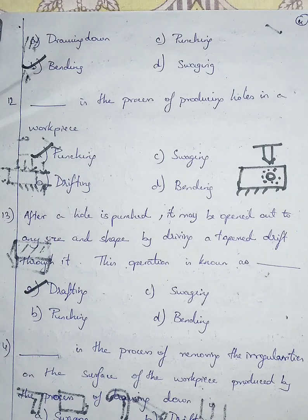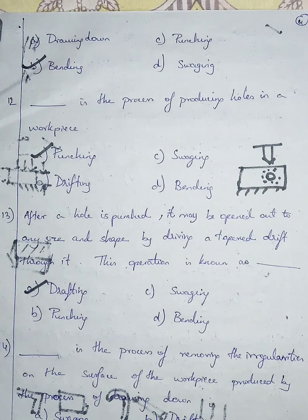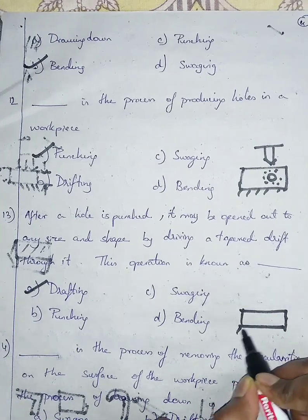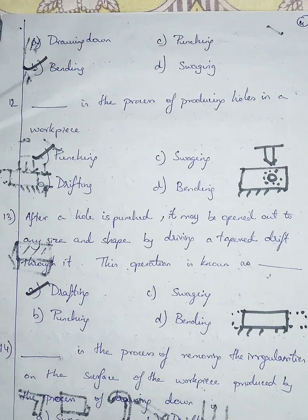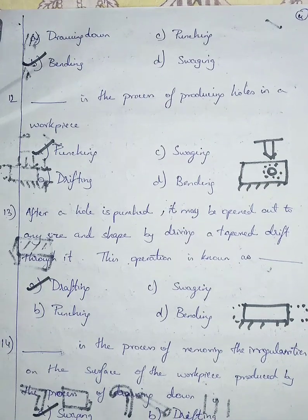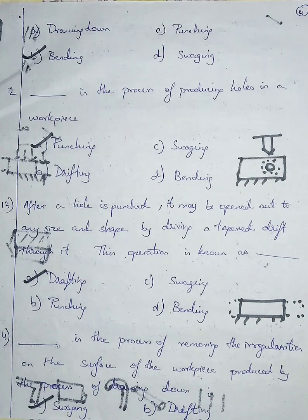Question number fourteen: dash is the process of removing the irregularities on the surface of the workpiece produced by the process of drawing down. Options: A swigging, B drafting. While performing drawing down — placing a workpiece flat and beating it to increase length and decrease thickness — some irregularities form on the surface. Those irregularities are removed by the process called swigging. So I'm going with option A, swigging.